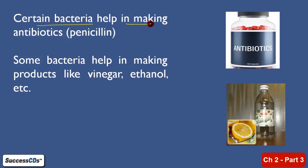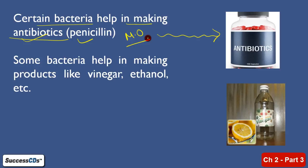Some bacteria help in making antibiotics, like penicillin. Antibiotics are always taken in order to prevent or suppress the growth of microorganisms. Suppose you have a microorganism in your body and you have a disease — the doctor will prescribe you to take antibiotics. This is the work of antibiotics. When you take antibiotics, they actually suppress the growth or prevent the growth of microorganisms.